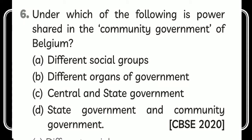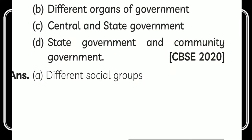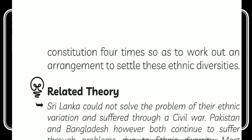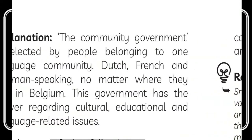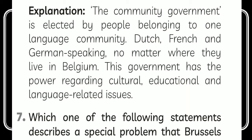The next question is: under which arrangement is power shared in the community government of Belgium? The options include between different social groups, between central and state government, or central, state, and community government. The answer is between different social groups. The community government is elected by people belonging to one language community — Dutch, French, or German speaking — regardless of where they live in Belgium. This government has power regarding culture, education, and language-related issues.